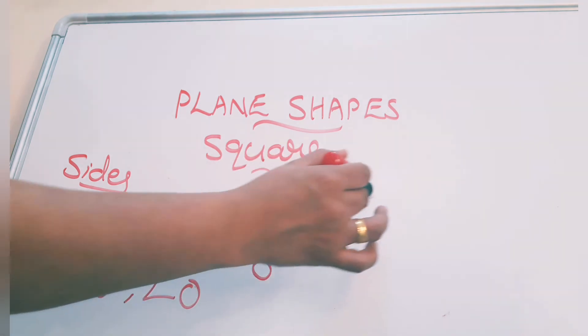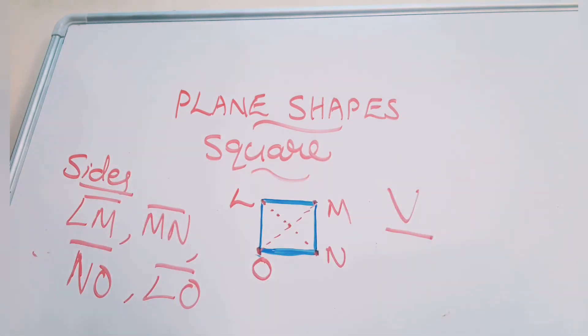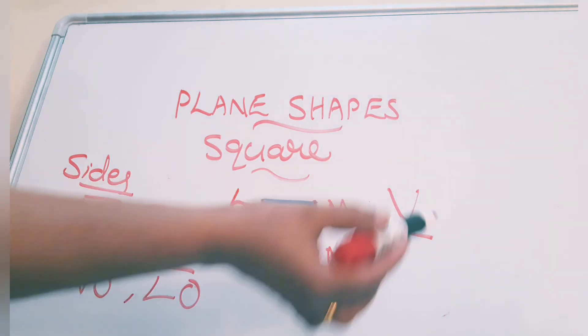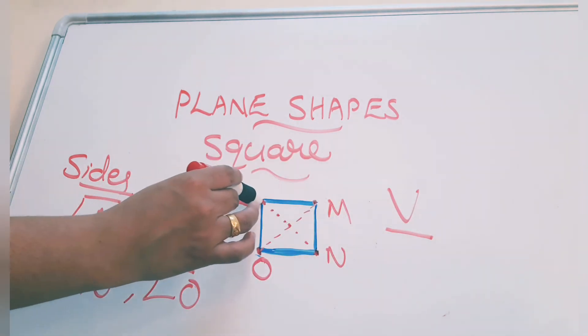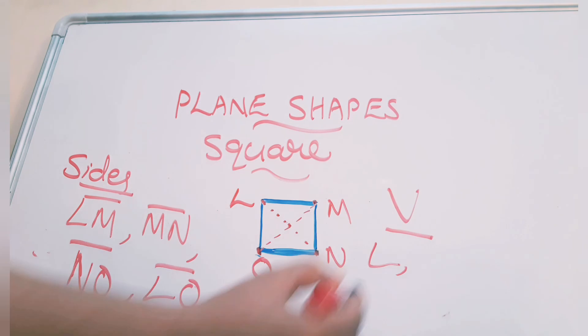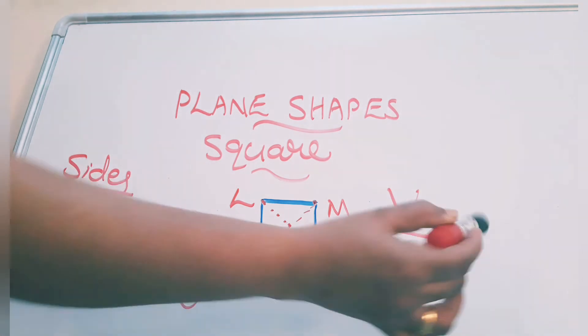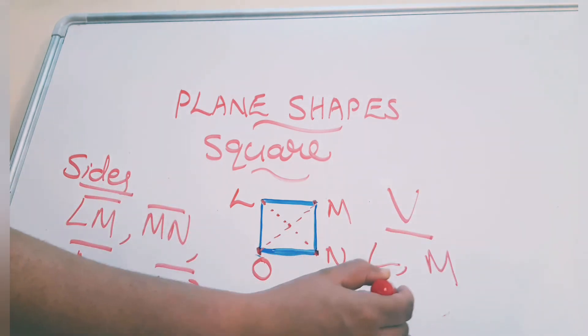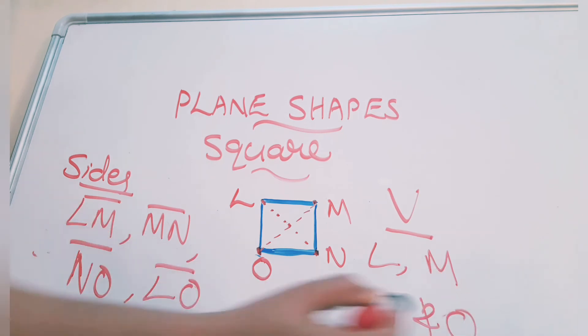Now vertices. Corners. Vertices. V means here, I am making sure, vertices means corners or corners or vertices. Vertices. Singular. L, M, N, O. Vertices.